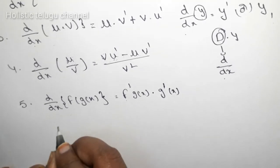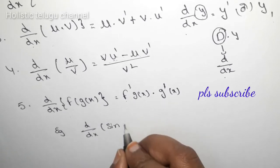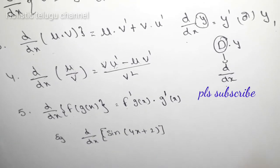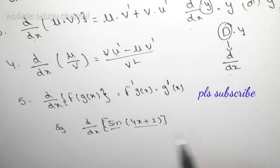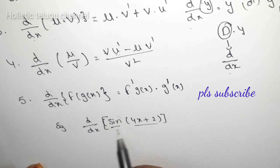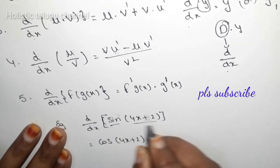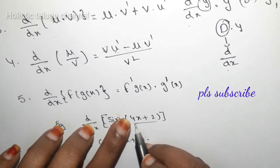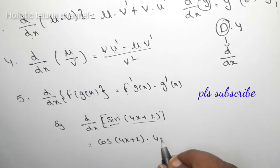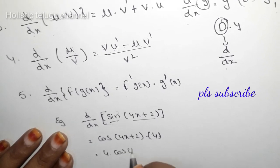Let's show an example. What is d by dx of sin(4x plus 2)? So, sin(4x plus 2) — first we differentiate sin, which gives cos, keeping the inside the same: cos(4x plus 2). Then we differentiate the inside 4x plus 2. The derivative of 4x is 4, and constant 2 gives 0. So the answer is 4 cos(4x plus 2).